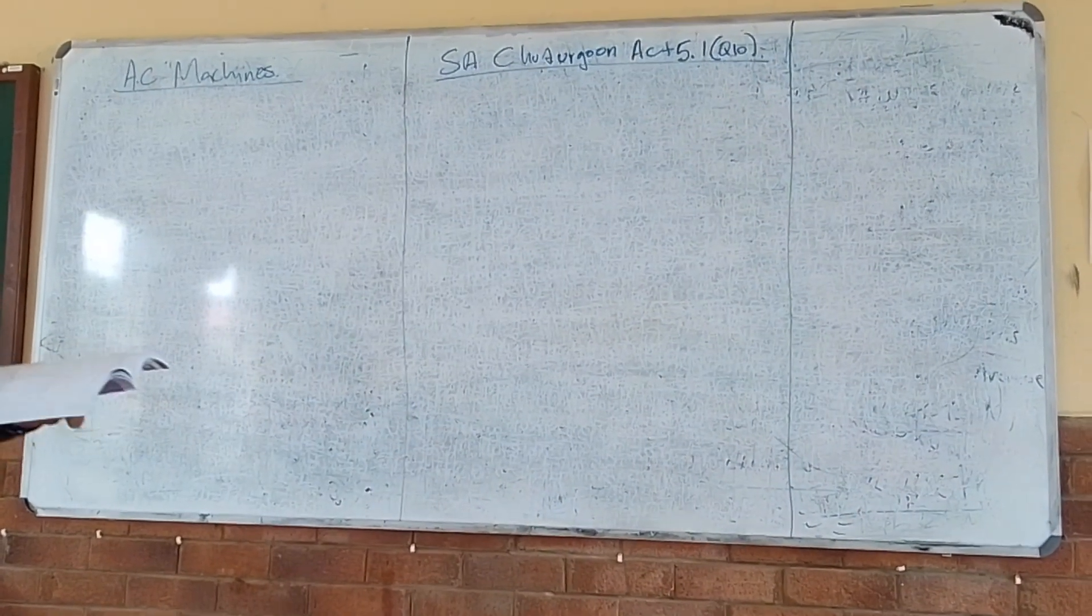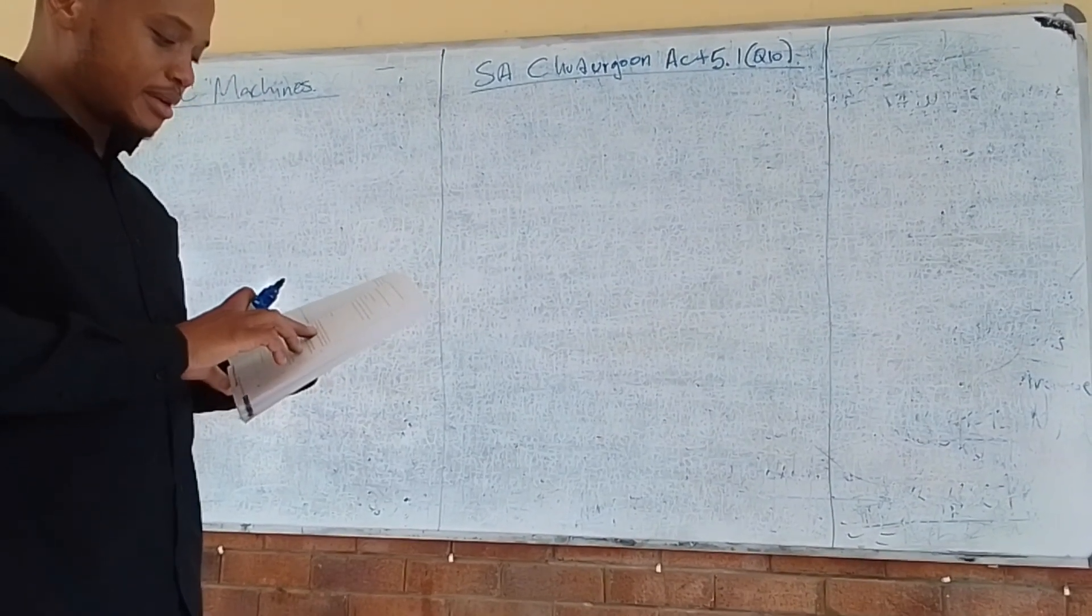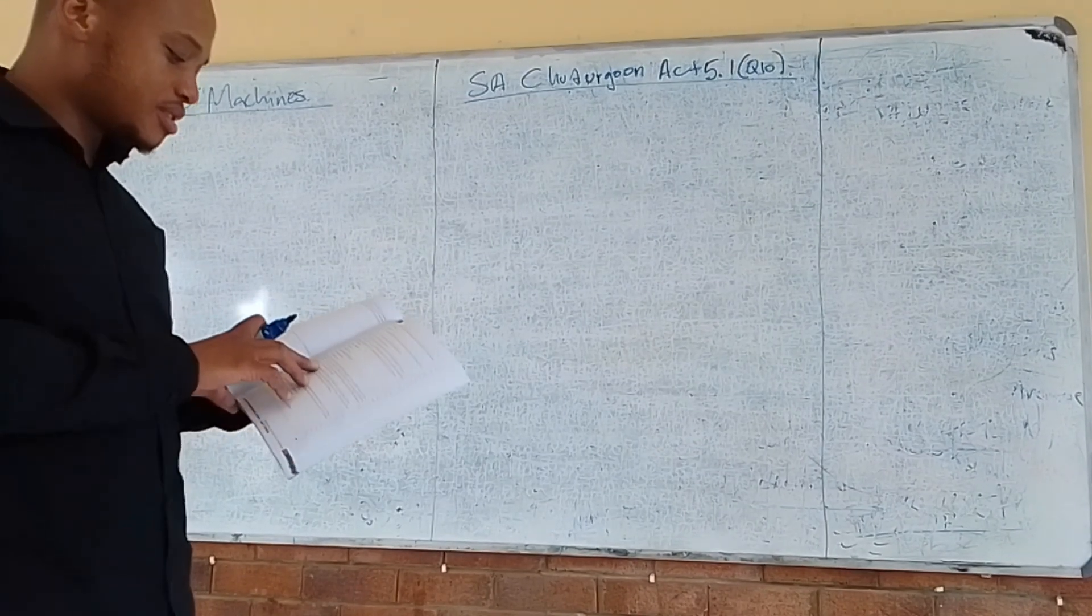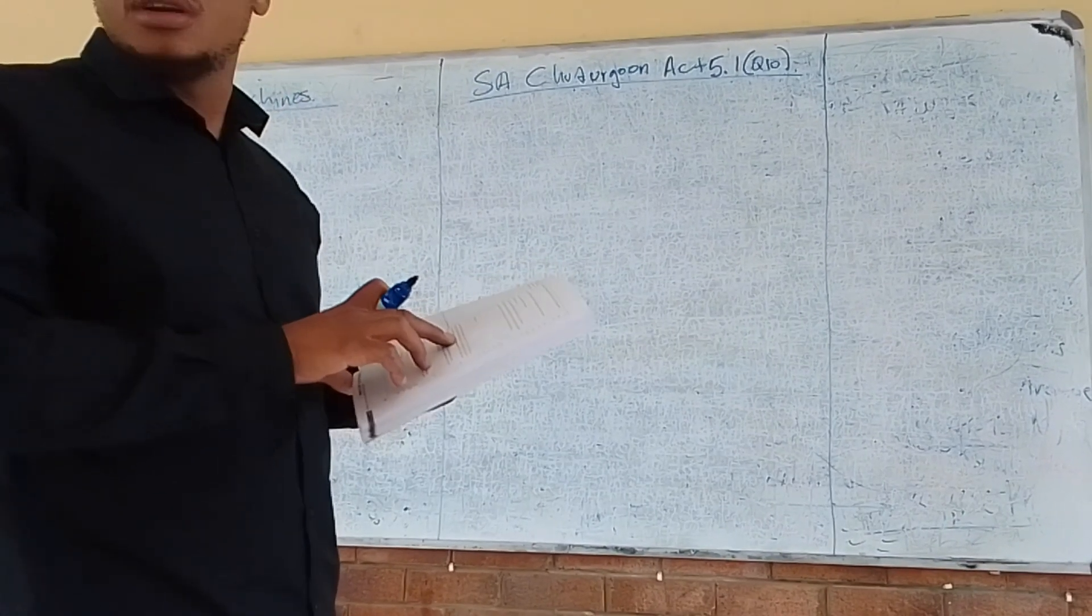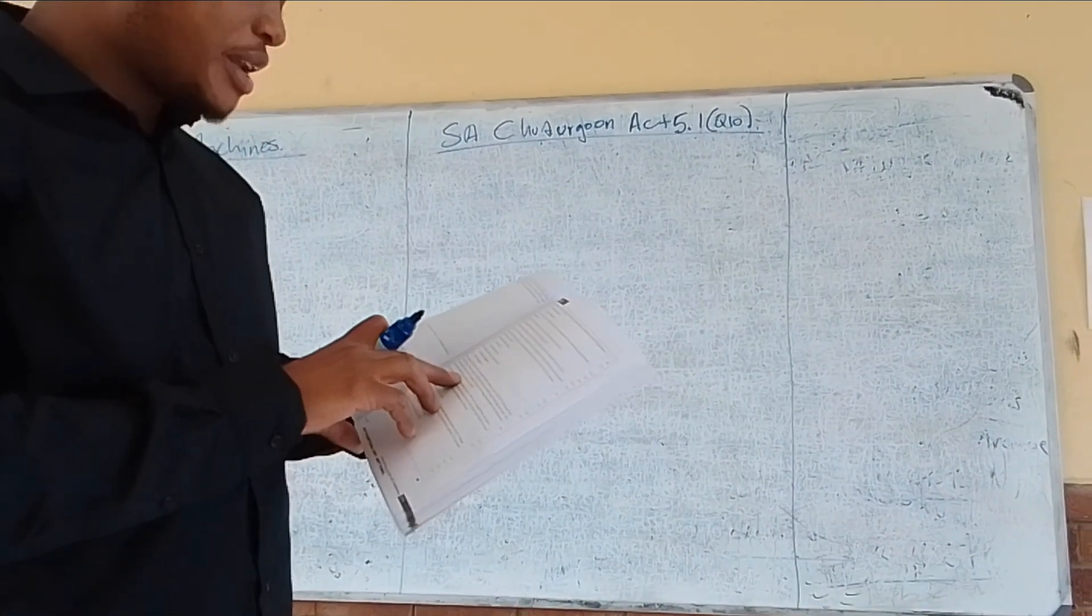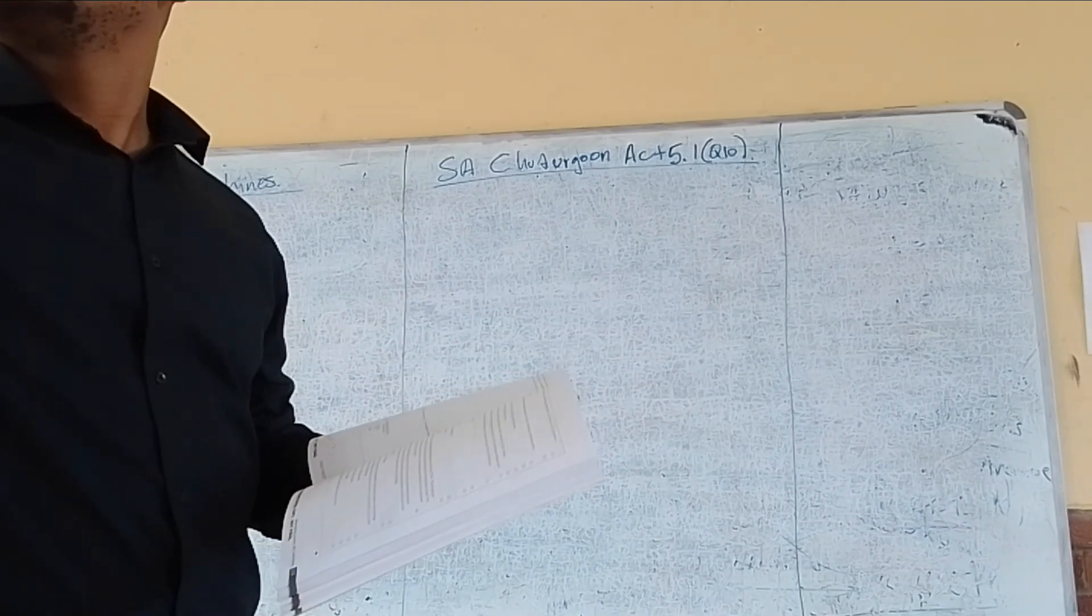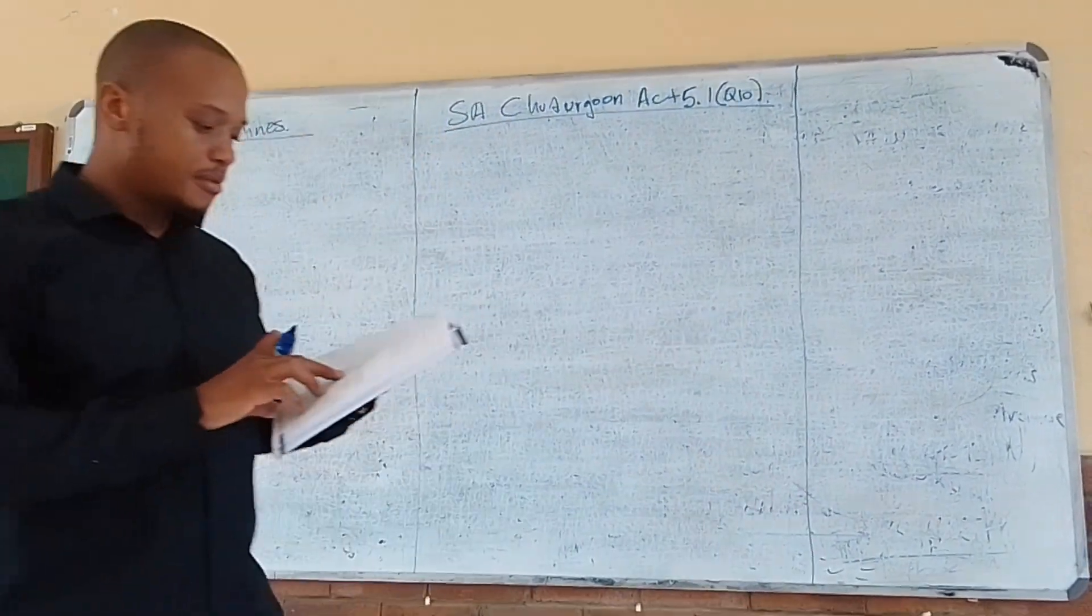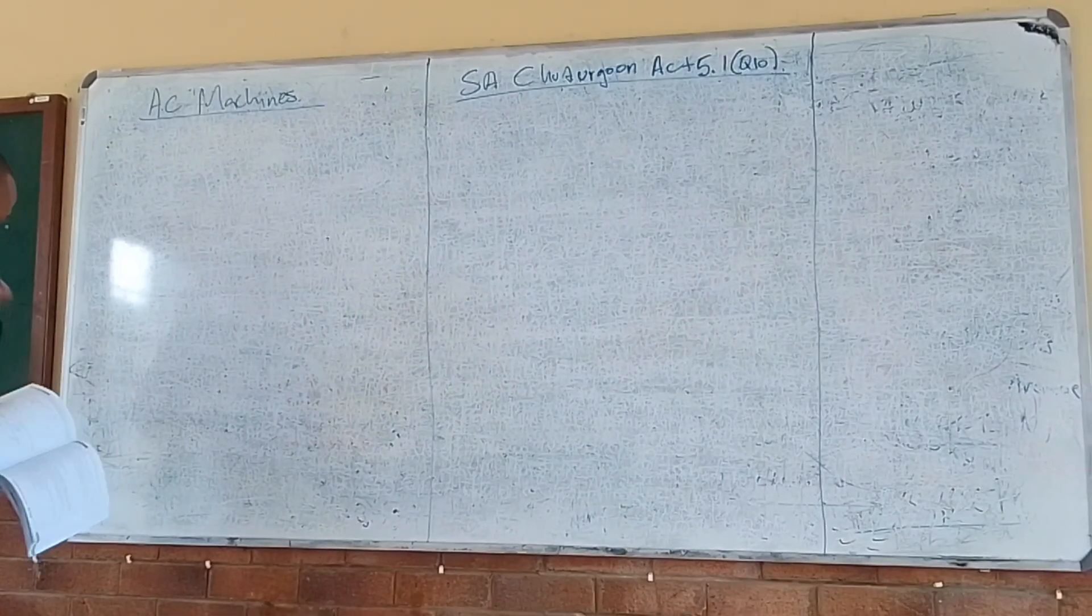The question is as follows: The 3-phase, 4-pole, star-connected alternator supplies a load at 50 Hz. The stator has a total of 96 slots. The 6-turn coils are fully pitched and double layer windings are used with a distribution factor of 0.956. Calculate the open circuit voltage generated by the alternator when the useful flux is 55 milliwebers.